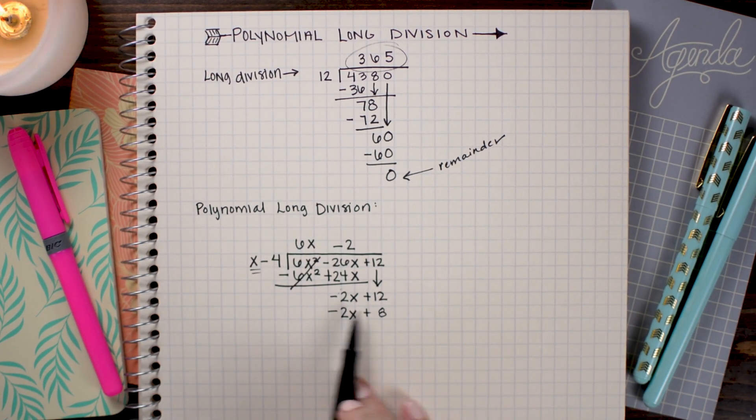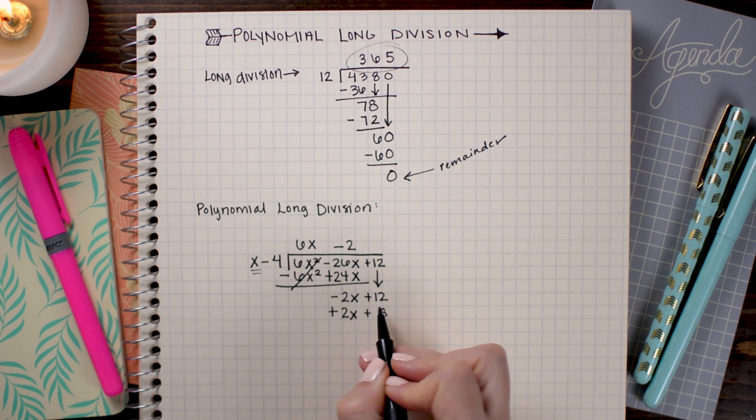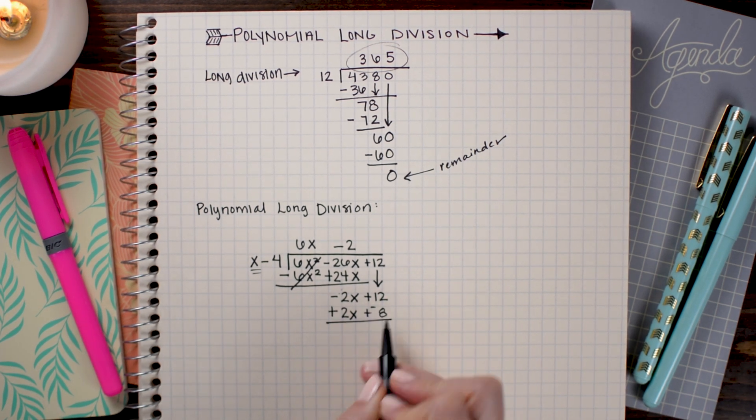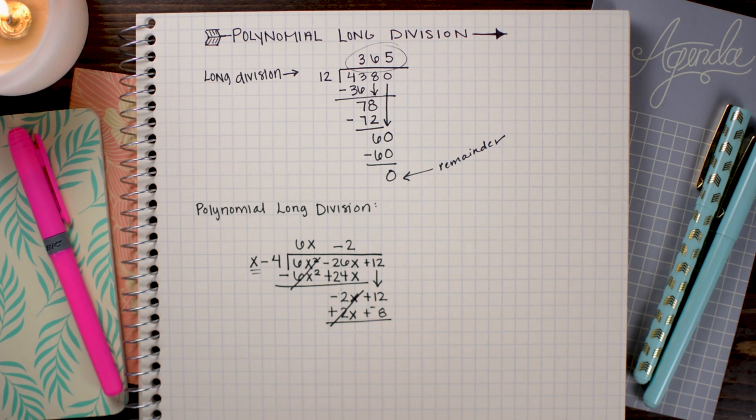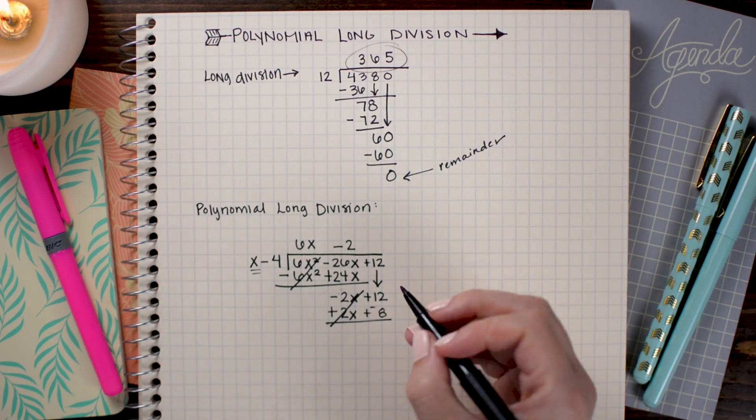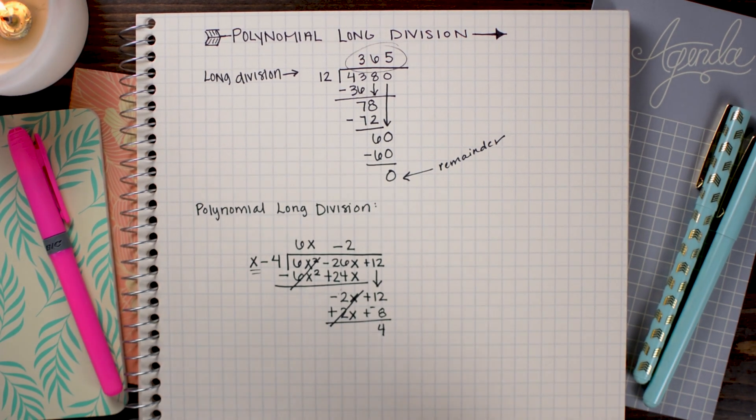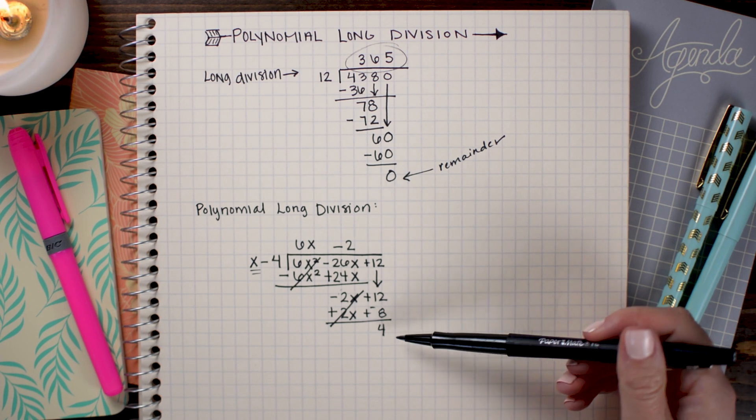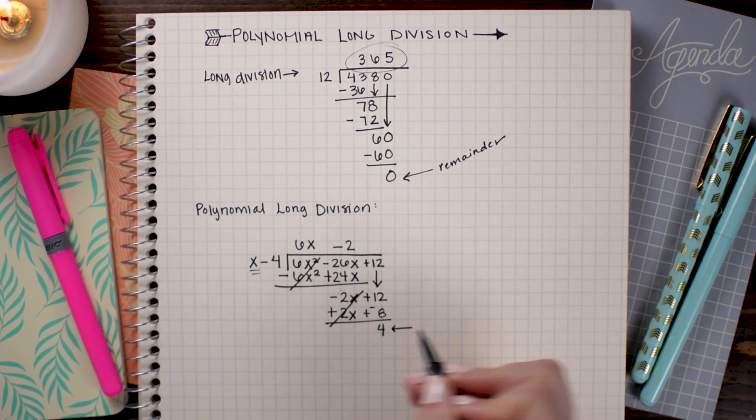Lastly, I'm going to subtract. So I'm going to flip the two signs. And I get 0 here and 12 - 8, which is 4. Now that I'm at the very end and I have nothing left to bring down, this is my remainder.